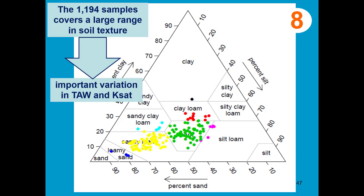This will result in different values for field capacity, wilting point, total available water, and saturated hydraulic conductivity. To consider only 8 soil types might not adequately characterize the variation in soil physical characteristics of the region.